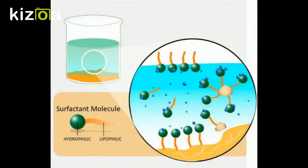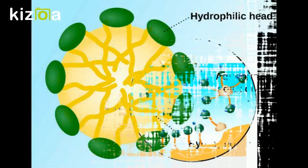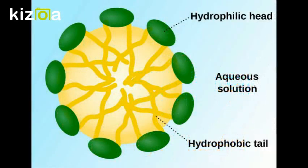Surfactants are effective at laundering because they are what's known as an emulsifier. The full description is that they are an amphiphilic compound. This means that they are a compound which contains both one side that is hydrophobic and one side that is hydrophilic. Therefore, surfactants are useful because they are both oil-soluble and water-soluble, meaning that they allow oil-based soils to be lifted and removed by the water used in the laundering process.